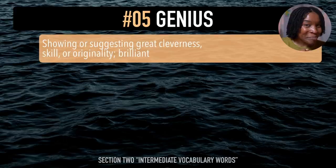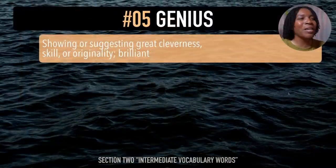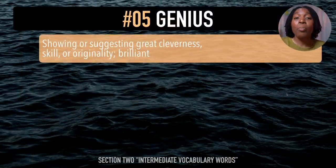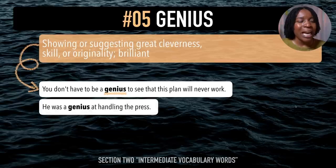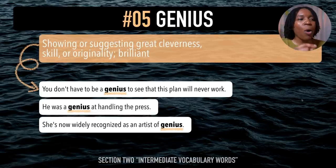The next intermediate vocabulary word is 'genius'. After me — genius. This means showing or suggesting great cleverness, skill, or originality — brilliant. Example sentences: You don't have to be a genius to see that this plan will never work. He was a genius at handling the press. She's now widely recognized as an artist of genius. Last time — genius.